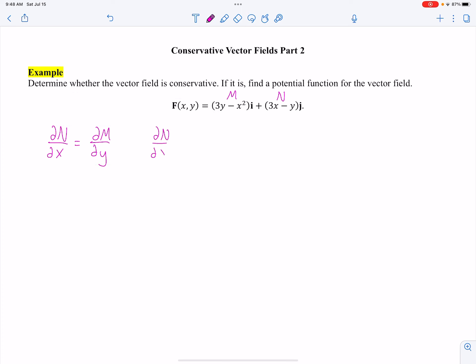So N with respect to X, okay, that's a 3. If I do M with respect to Y, I also get 3. Thus, F is conservative.